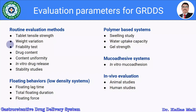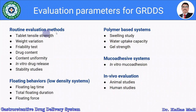The gastroretentive drug delivery system is evaluated with respect to routine evaluation methods, floating behavior in the case of low density systems, and for polymer-based systems, swelling study, water uptake capacity, and gel strength. For mucoadhesive systems, in vitro mucoadhesion and in vivo evaluation are studied. Routine evaluation includes tablet hardness and tensile strength, weight variation, friability test, drug content, content uniformity, in vitro drug release, and stability studies.